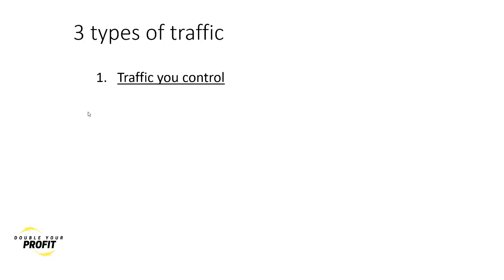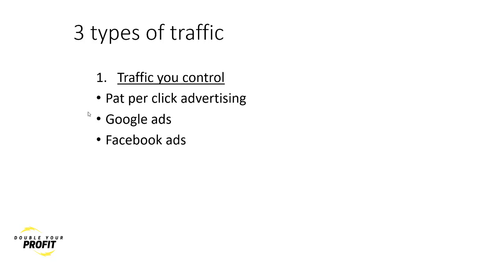Number one kind of traffic is the traffic you control. These include pay-per-click advertising - Google ads, Facebook ads, solo ads, and banner ads. If you're thinking of growing your business, if you're thinking of scaling, the best type of traffic there is is the traffic you control.